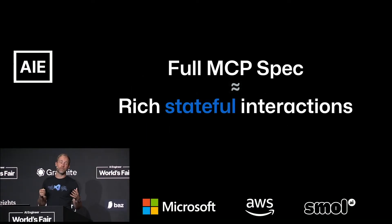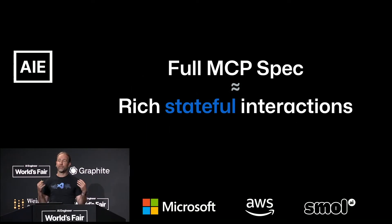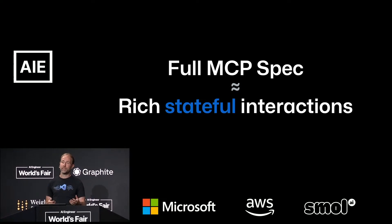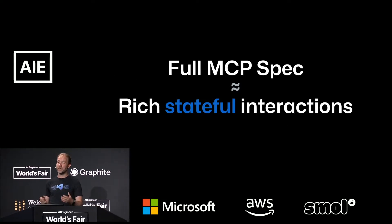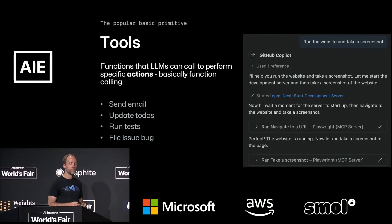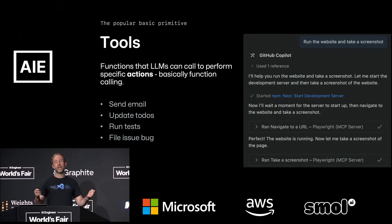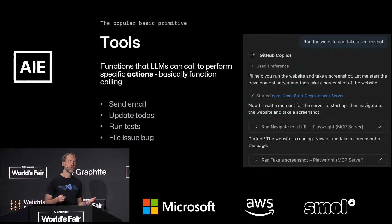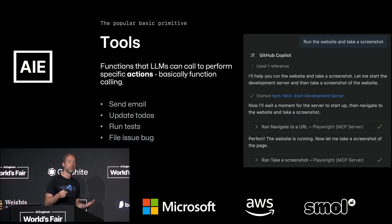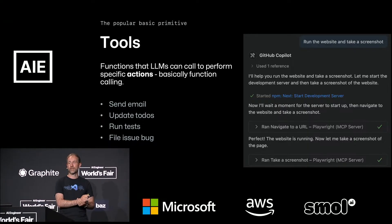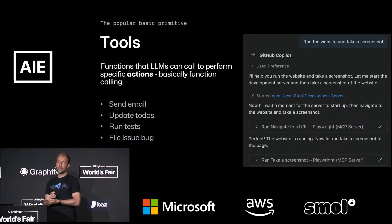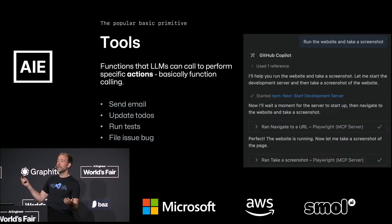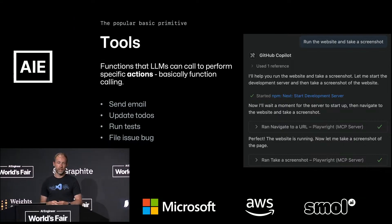If you go with full MCP spec support, you can unlock these rich, stateful interactions that MCP's vision is really outlining for how agents should work together. Starting with the most obvious: tools. Tools reflect actions — well defined, performing actions — and mostly easy mapping to function calling if you're used to that.